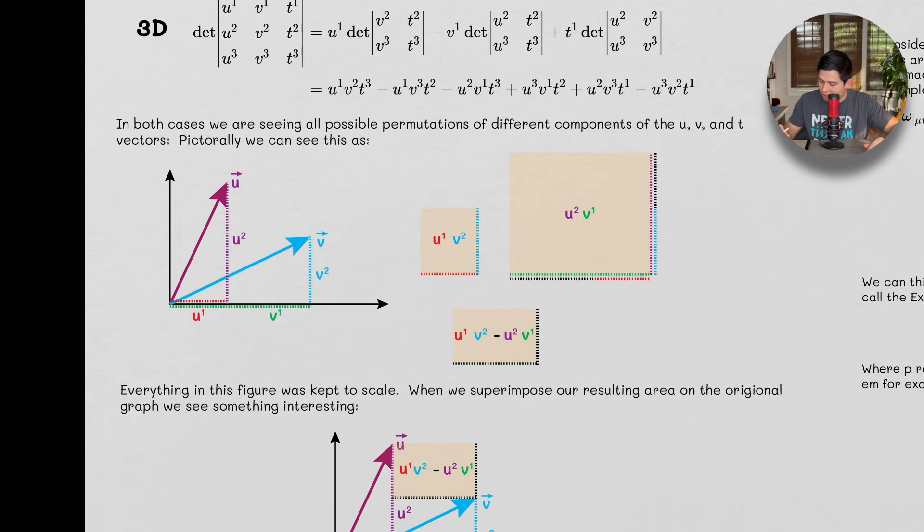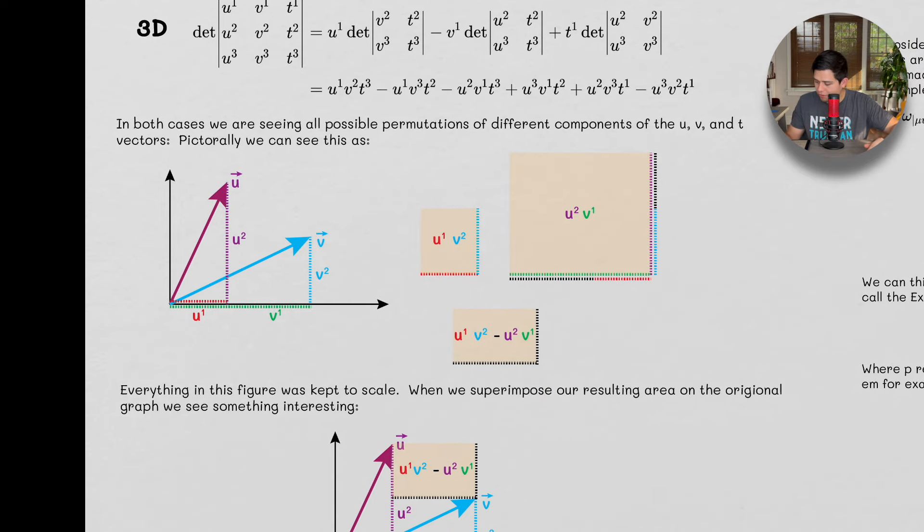In both cases, we're seeing all possible permutations of different components of the u, v, and t vectors. Pictorially, we can look at it like this. So we have our u vector, we have our v vector, again we're just doing this in 2 dimensions now. We could do this in 3 dimensions, but we'll generalize later.